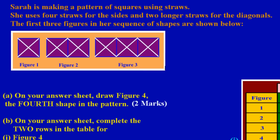It states Sarah is making a pattern of squares using straws. She uses four straws for the sides and two longer straws for the diagonals. The first three figures in her sequence of shapes are shown below. Now here they are, we have the first three figures here.